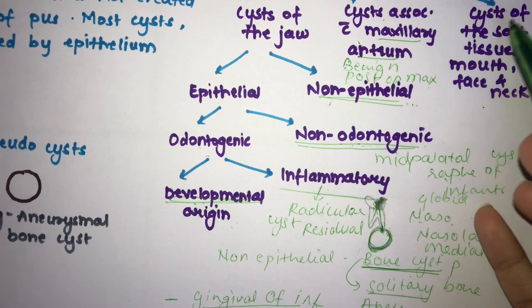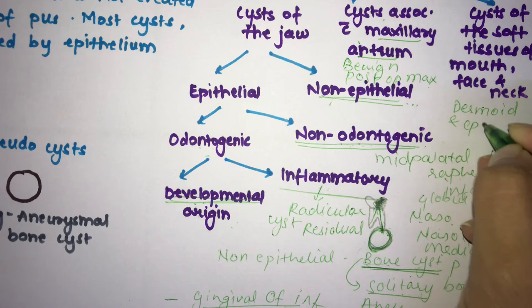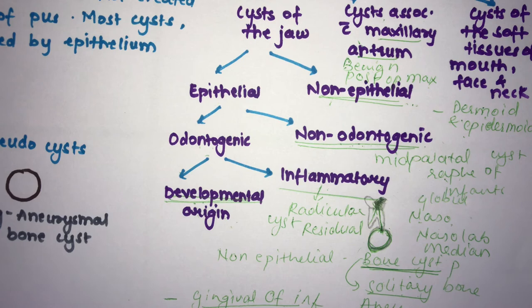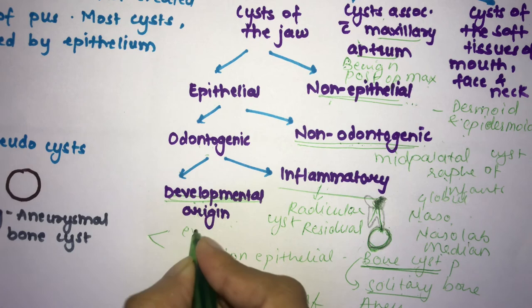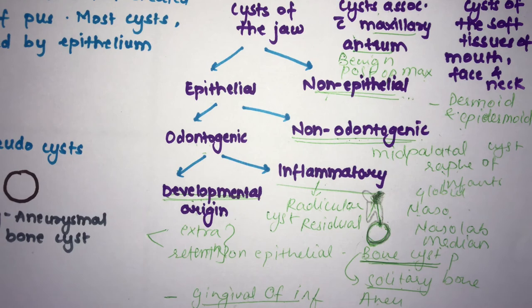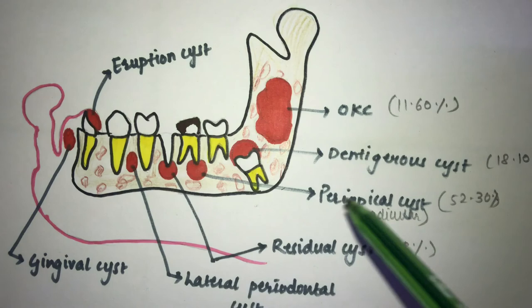Cysts of the soft tissues of the mouth, face, and neck include: dermoid and epidermoid cyst, thyroglossal duct cyst, anterior median lingual cyst, cystic hygroma, nasopharyngeal cyst, thymic cyst, cysts of the salivary gland (mucous extravasation type and retention type), ranula, and parasitic cysts such as hydatid cyst.